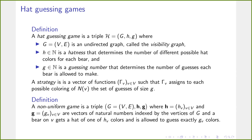Formally, the hat guessing game is a triple: G, an undirected graph called the visibility graph; H, the hatness, meaning how many colors are available for each bear — in the uniform setting, every bear can receive one of at most H colors; and g, the guessing number, determining how many guesses each bear is allowed. A strategy is a vector of functions, one per vertex, assigning to each possible coloring of its neighborhood a set of guesses of size at most g.